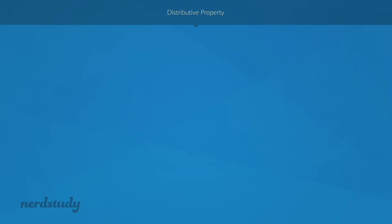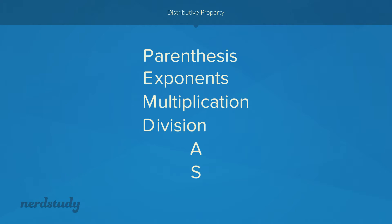The order of operations is more commonly known as PEMDAS, where the P stands for parentheses, the E stands for exponents, then multiplication and division, and lastly addition and subtraction.